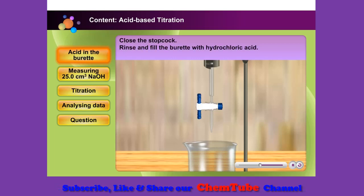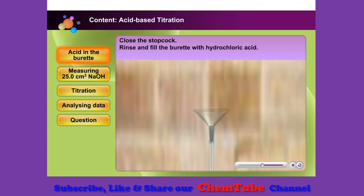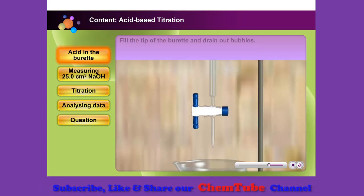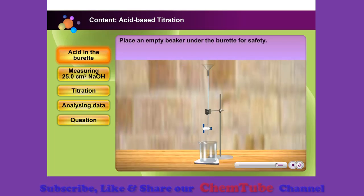Close the stopcock and fill the burette with 50 cubic centimetres of hydrochloric acid. Open the stopcock to fill the tip of the burette with hydrochloric solution and to remove bubbles. Place an empty beaker under the burette. Now the burette is ready to be used.